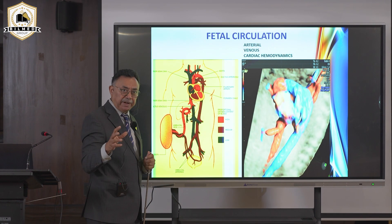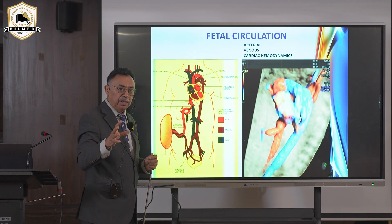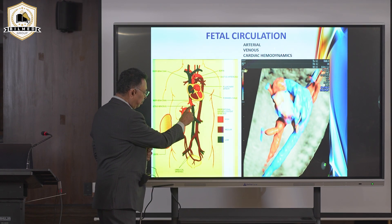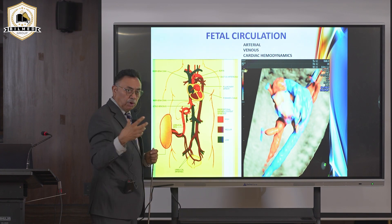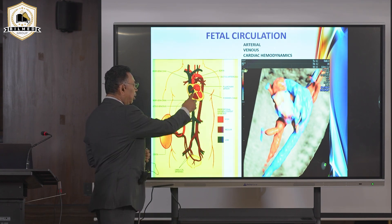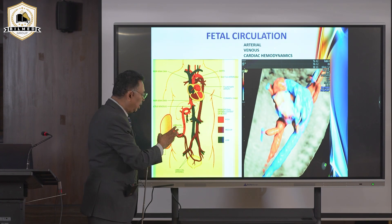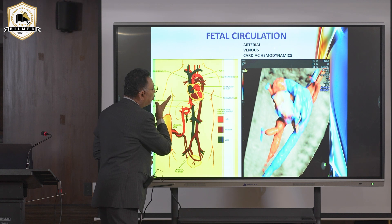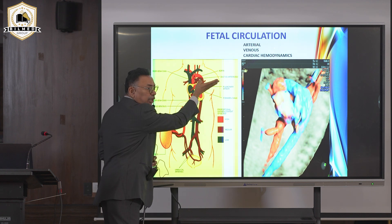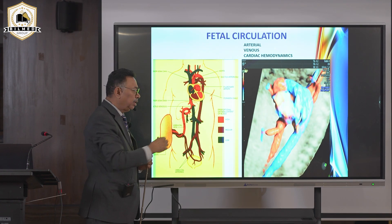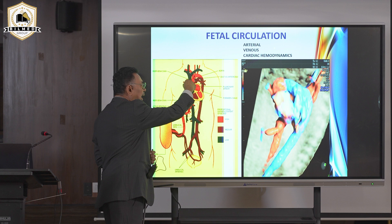The rest of the pure blood enters the fetal inferior vena cava via a small vessel called the ductus venosus. The inferior vena cava opens into the right atrium, and at that time the foramen ovale is open, positioned at an angle in the right atrium.